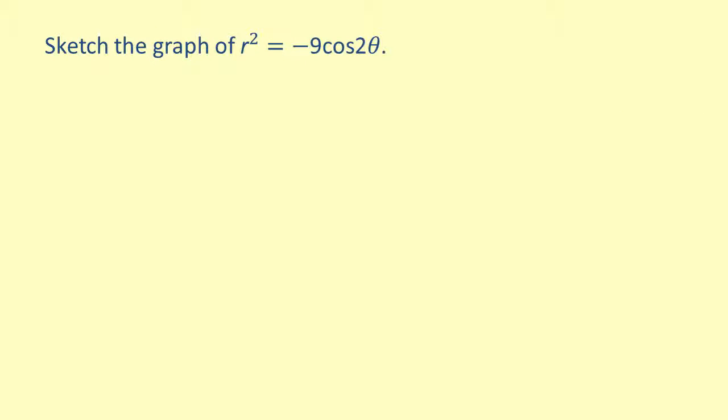Let's sketch a graph of a lemniscate. We have the equation r squared equals negative 9 cosine of 2 theta.